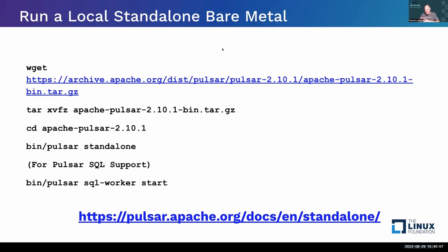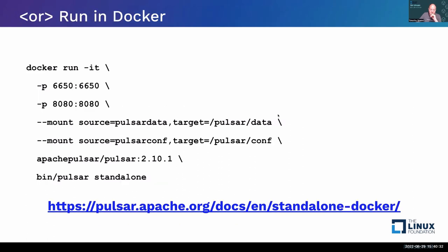To get started, save these slides, download them, and follow along. To run Pulsar on premise, download it, untar it, type 'bin/pulsar standalone' and you're ready to go. You'll need a JDK — other than that, you're fine. Runs on Mac, Windows, all the Linuxes. If you don't want to worry about infrastructure, run it in Docker or a Kubernetes environment.